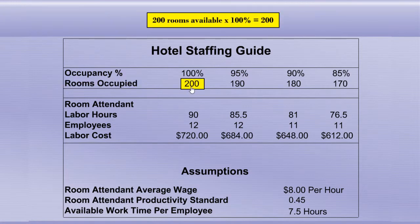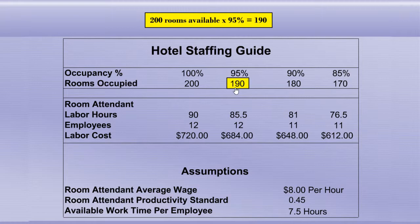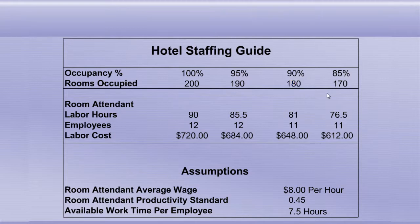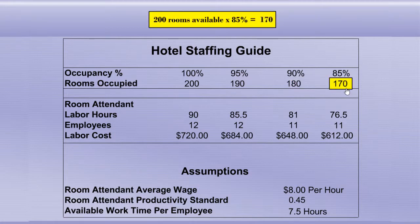200 rooms available times 100% equals 200. 200 rooms available times 95% equals 190. 200 rooms available times 90% equals 180. 200 rooms available times 85% equals 170.